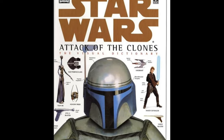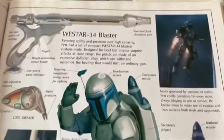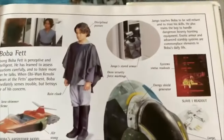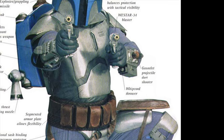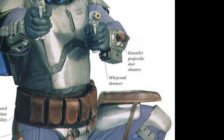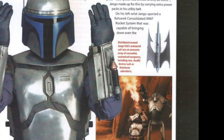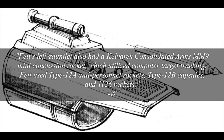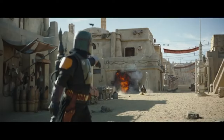First off, we're going to start with the Star Wars Visual Dictionary. This is a book where you can see props from the movie, different characters and items, and it will tell you a little bit about them and classify them. But they mislabeled his whip cord thrower — they put it on the wrong gauntlet. They have it listed where the flamethrower is, but the whip cord thrower comes out of a small hole on his right gauntlet, not his left. Also, they mislabeled the rocket firing on top. It says it's a gauntlet projectile dart shooter, which is also incorrect — it's just a little missile that fires, not a dart shooter.